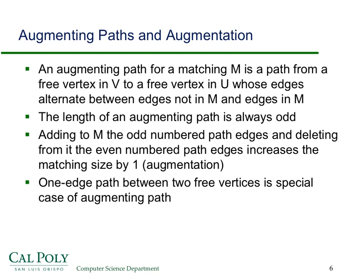It's a path from a free vertex in V and a free vertex in U, whose edges alternate between edges not in M and edges in M. And the length of the augmenting path is always odd. So there's going to be an even number of edges in the matching and an odd number of edges that are not in the matching. So what you do then is add to M the odd-numbered path edges and delete from it the even-numbered path edges, and that increases the matching size by one.